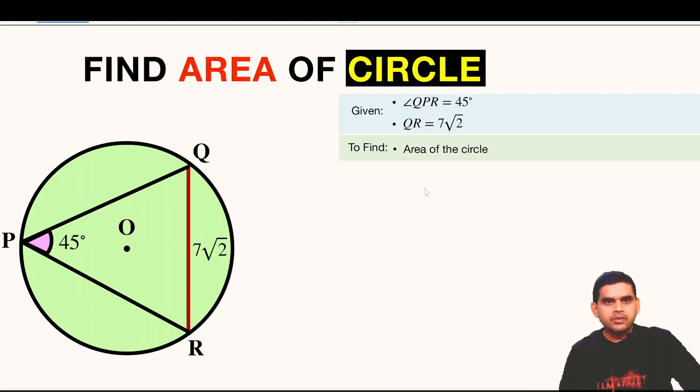In today's question we are given a circle and there are three chords forming a triangle PQR. Angle at P is 45 degrees. The length of chord QR is 7 root 2 and we are asked to find the area of this circle.